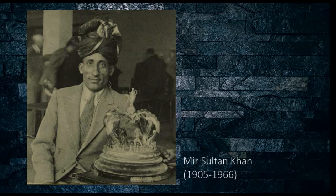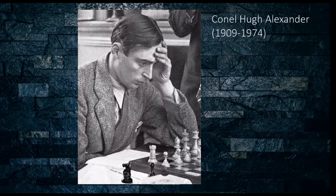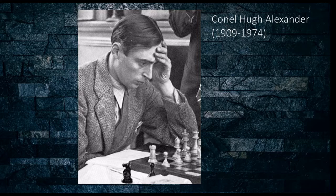He has played some fantastic games and many of them you can see on YouTube — I will put the links in the description below. Today I want to show you one game which Mir Sultan Khan played against another chess player whose name was C.H. Alexander. C.H. Alexander was more famous for working in cryptography and with British intelligence, working alongside Alan Turing cracking the code for the Enigma machine that the Germans used to encrypt messages. Alexander was also a two-time British Champion and a pretty decent player, perhaps of international master strength.